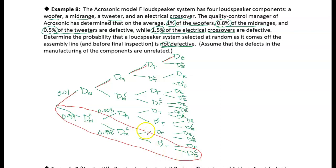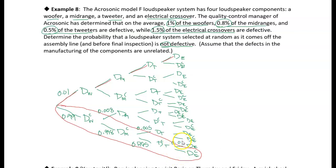For the tweeter, the probability of being defective is 0.005 — a 0.5% chance — which means the probability of not getting a defective tweeter is 0.995. The electronic crossover has a probability of 0.015, or 1.5%, which means the probability that it's not defective is 0.985, a 98.5% chance.